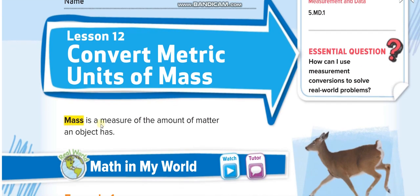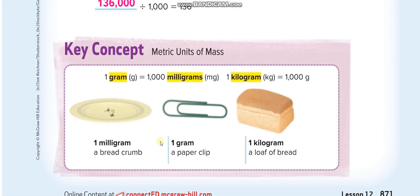Mass is a measure of the amount of matter an object has — basically how heavy something is. We have three units: one milligram is like a breadcrumb, one gram is like a paper clip, and one kilogram is like a loaf of bread.